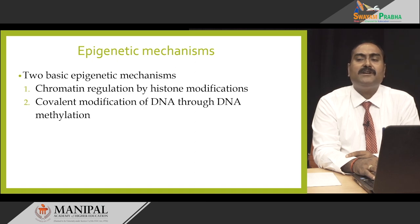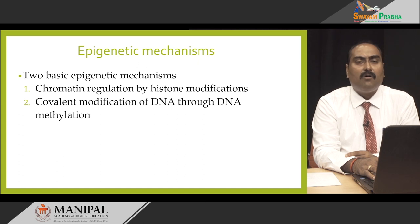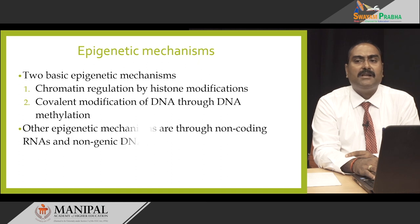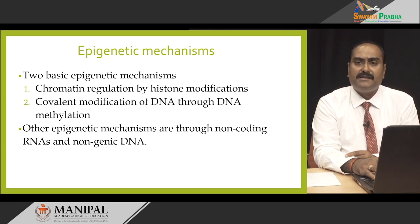There are two basic epigenetic mechanisms: either I regulate the chromatin structure — making it much more tightly coiled or loosely coiled and changing the accessibility to the DNA by doing modifications on the histone molecules — or I do covalent modifications of DNA through a process known as DNA methylation. Other epigenetic mechanisms include non-coding RNAs and non-genic DNAs. Whatever the histone modifications are, the basic alteration happens in the charge properties and chemical bonds, which makes the DNA either more loosely or more tightly attached.